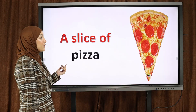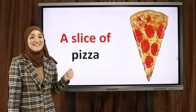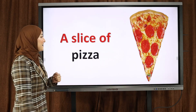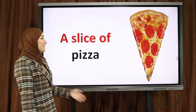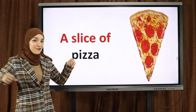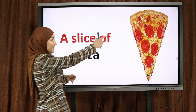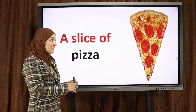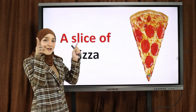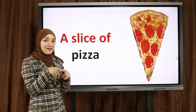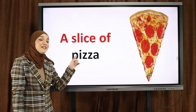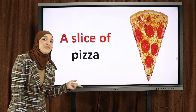Number two — do you like pizza? Look at the picture: a slice of pizza. This is the slice — قطعة من البيتزا. The slice has the shape of a triangle — تأتي في شكل مثلث. So: a slice of pizza.